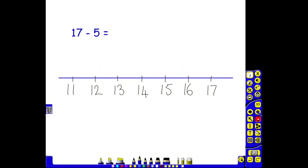So if we take this as a starting point, this is a marked number line, and we have the question 17 take away 5.